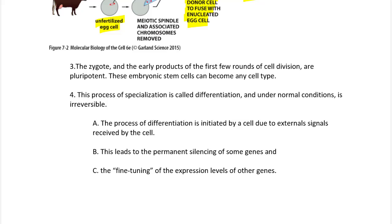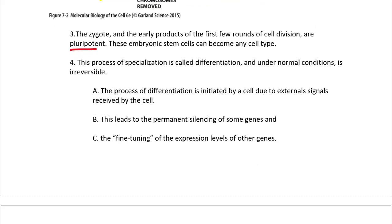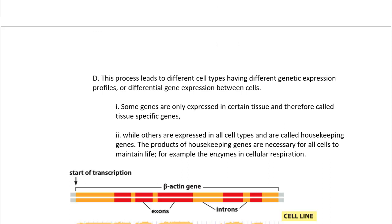The zygote and early products of the first few rounds of cell division are pluripotent — embryonic stem cells can become any cell type. Pluripotent means that all genes have not yet been silenced. Depending on the environment during development, they become different cell types as different genes are silenced and the phenotype becomes specialized. This specialization process is called differentiation and is normally irreversible. It is initiated by external signals that lead to permanent silencing of some genes and fine-tuning of the expression level of others, resulting in differential gene expression between cells.